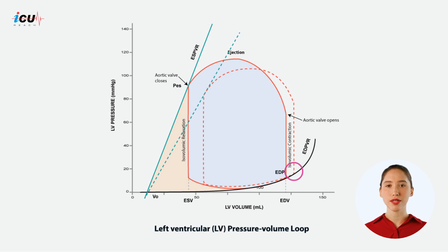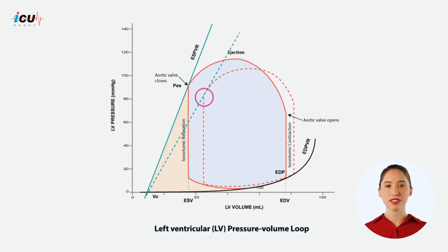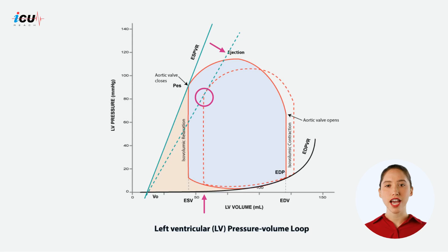end diastolic volume, and stroke volume. With decreased contractility, the left ventricle generates lower pressures at the end of systole for a given end systolic volume. This is reflected in a flatter slope of the ESPVR line.